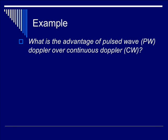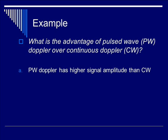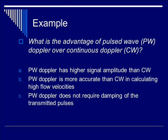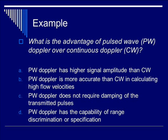Let's do an example. What is the advantage of Pulse Wave Doppler over Continuous Wave Doppler? Is it A, higher signal amplitude? Is it B, more accurate in calculating high flow velocities? Is it C, does not require damping? Or is it D, capability of range discrimination or specification? The correct answer is D — Pulse Wave Doppler has the capability of range-gate control.